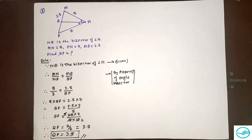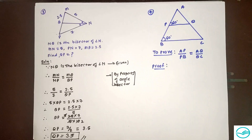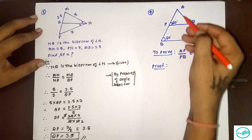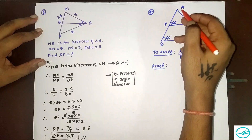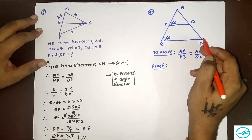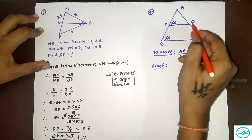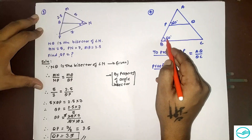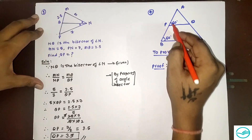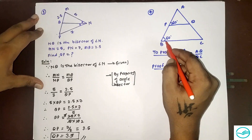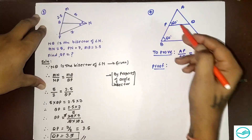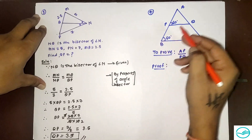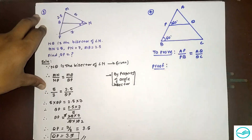This is the final answer. This type of question comes many times in board exams, so guys, you have to practice this type of question. Now let's move to question number 4. In a given figure, we have triangle ABC where angle APQ equals 60 degrees and angle ABC equals 60 degrees.